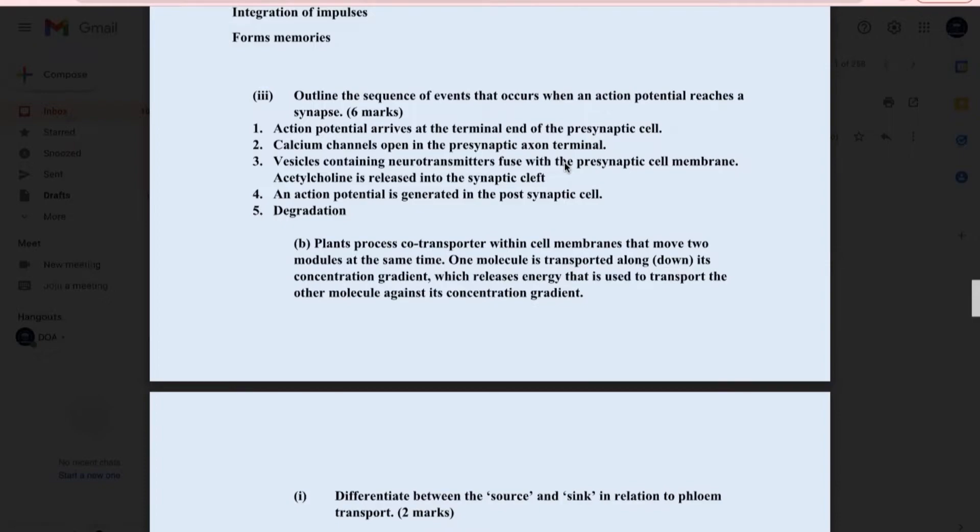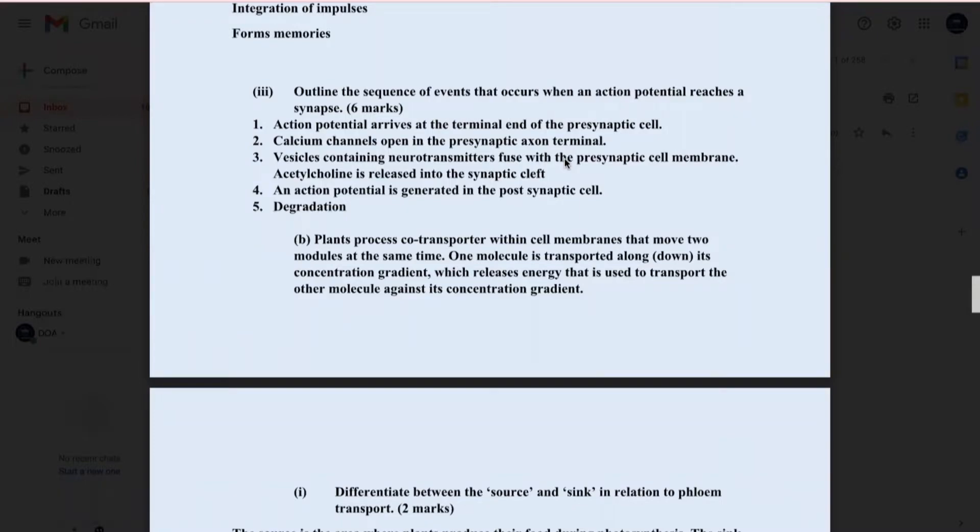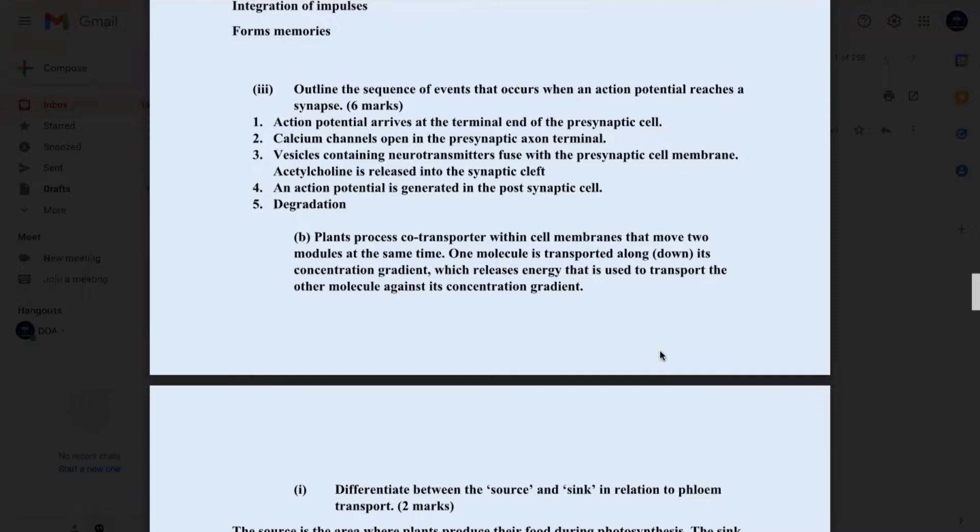Part three, outline the sequence of events that occurs when an action potential reaches a synapse. Now, to get a full understanding of the sequence of events, it's imperative that we touch on the anatomy of the neuron. The space between two neurons is called a synapse. The neuron preceding the synapse is called the presynaptic neuron. The neuron preceding the synaptic cleft is called the presynaptic neuron. Well, the neuron that comes after the synaptic cleft is called the postsynaptic neuron. And if you want to know more about neuronal biology, be sure to click the link in the description on my introduction to the nervous system. Neurotransmitter is a chemical that can excite or inhibit a target neuron. And they're stored in vesicles at the end of the presynaptic neuron when the neuron is at rest.